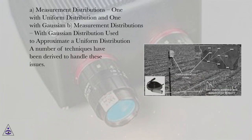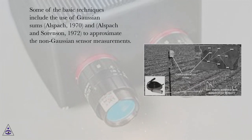A. Measurement distributions: one with uniform distribution and one with Gaussian. B. Measurement distributions with Gaussian distribution used to approximate a uniform distribution. A number of techniques have been derived to handle these issues. Some of the basic techniques include the use of Gaussian sums (Alspach, 1970, and Alspach and Sorensen, 1972) to approximate the non-Gaussian sensor measurements.